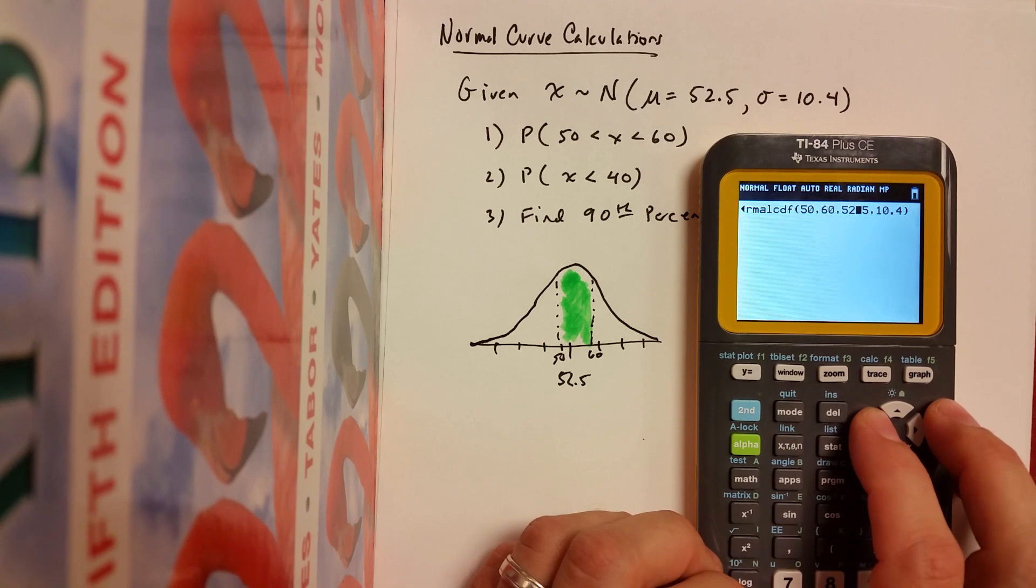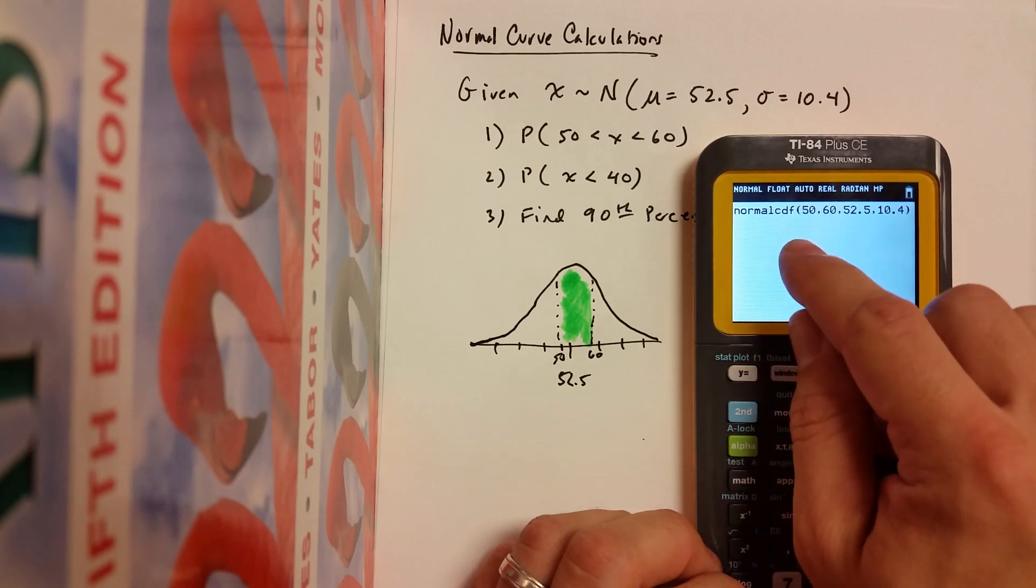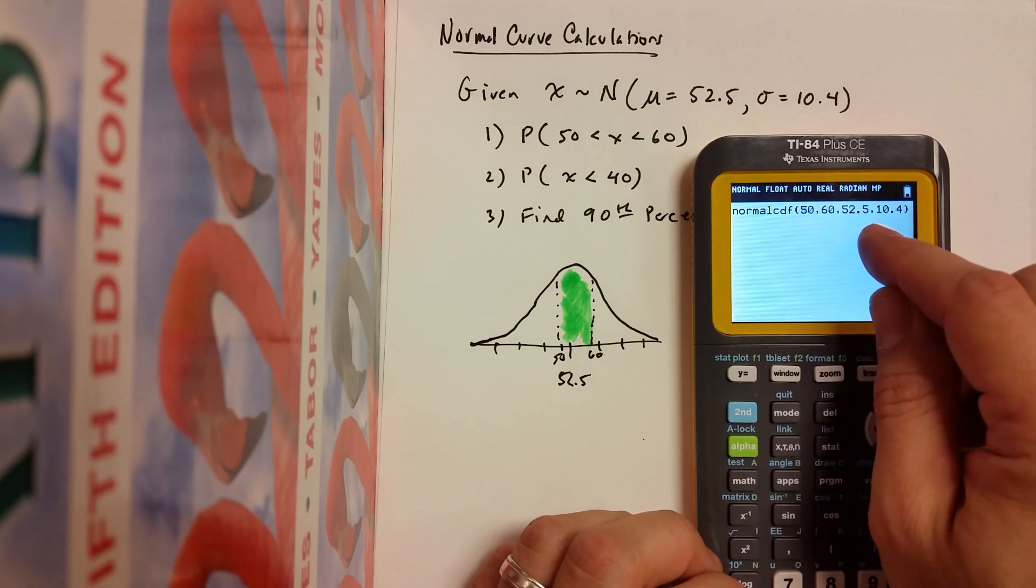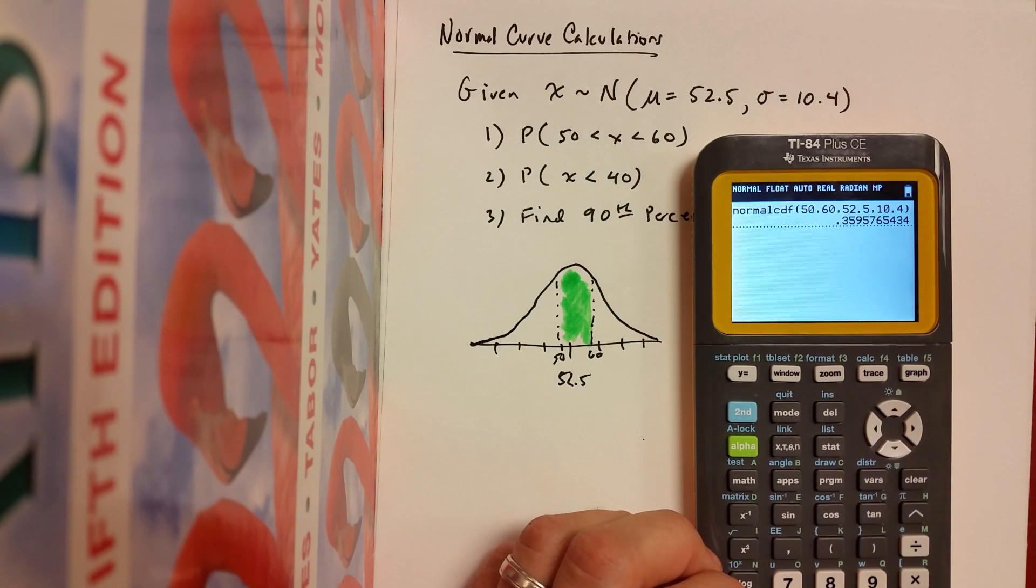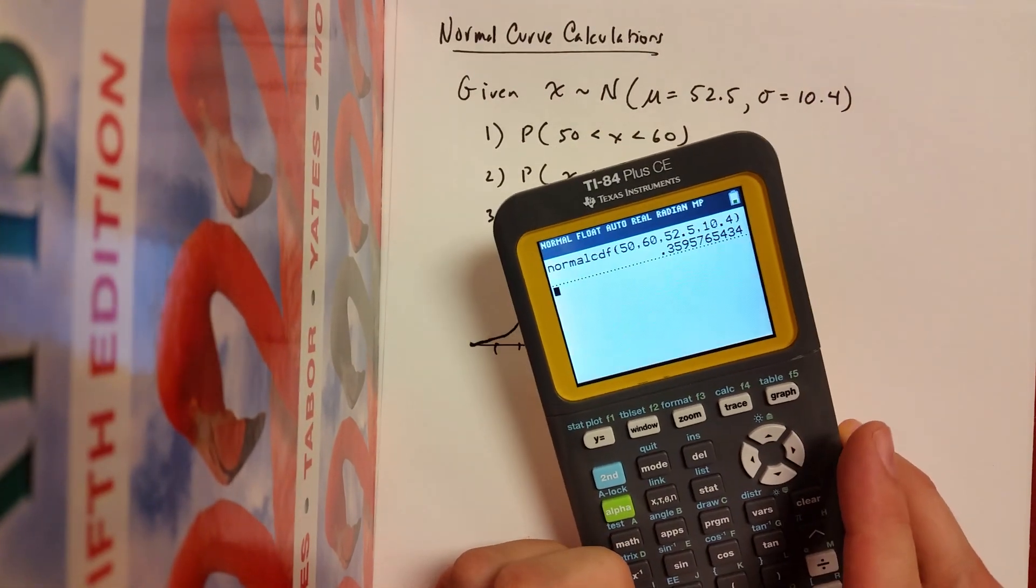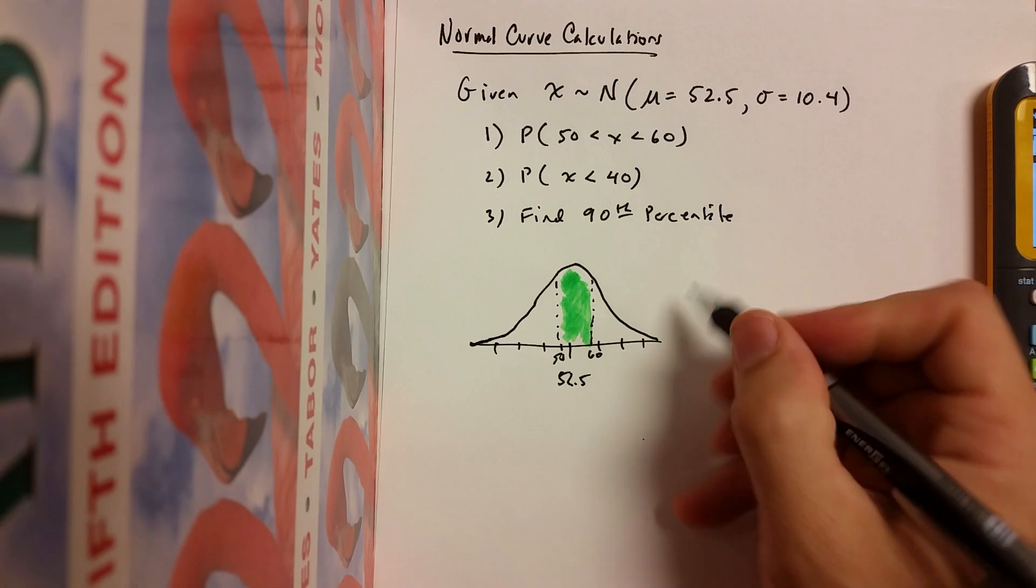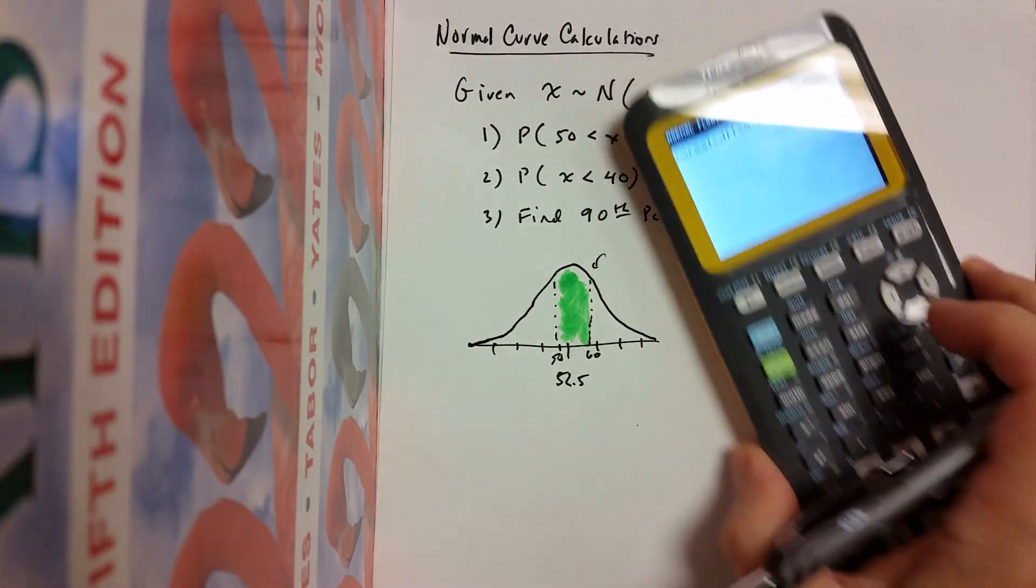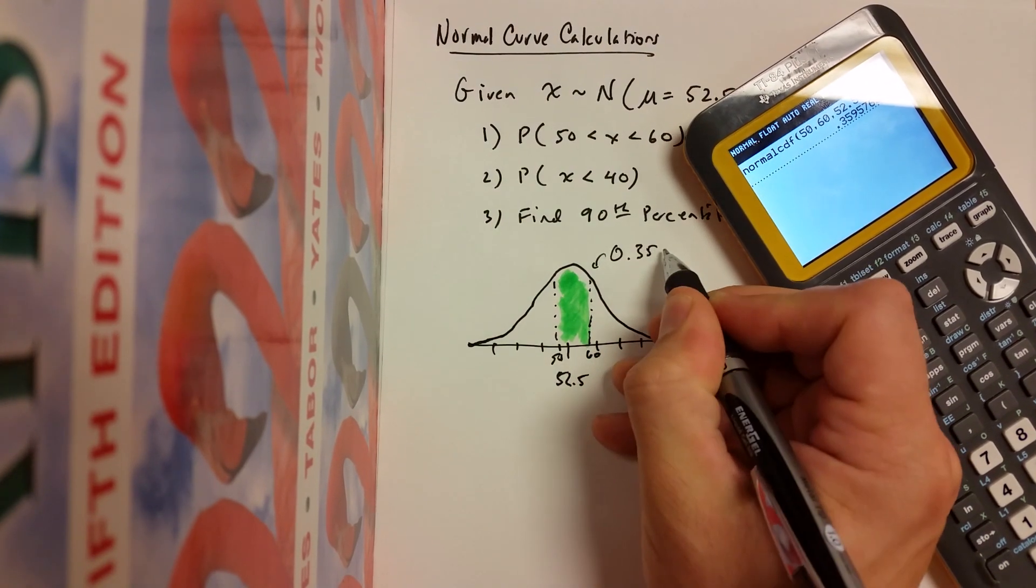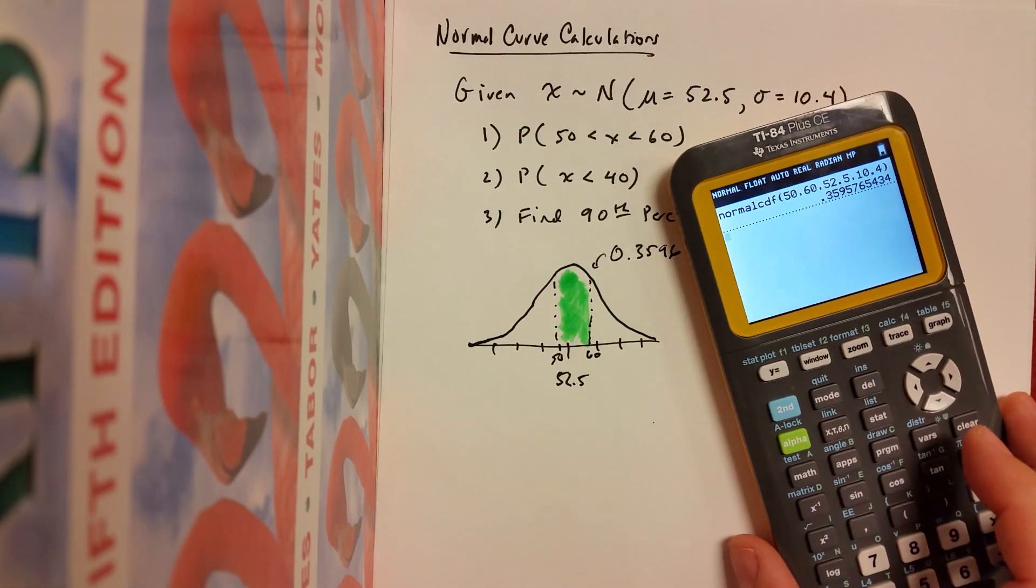If I just hit enter and paste it. So folks that do not have the fancy stat wizard, you have an older TI calculator, you'd have to actually just type these numbers in, in this order. And you would need to know that the first number you type in is the lower boundary, comma, upper boundary, comma, mean, comma, standard deviation. And if you hit enter, well, look at that. It just kind of told us that the answer is 35 point something percent, about 36%. So we're done. We don't really have to do anything too fancy. The calculator just told me that the area under the curve is 0.3596 or about 35.96%. Done. It's amazing.